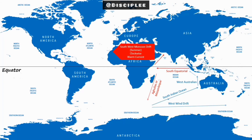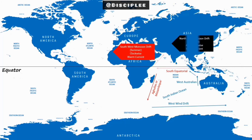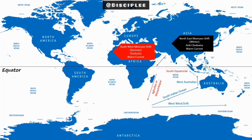This is reversed in winter beginning from December, when the northeast monsoon blows the currents from the northeast as the Northeast Monsoon Drift. The currents of the North Indian Ocean demonstrate most convincingly the dominant effects of winds on the circulation of ocean currents.